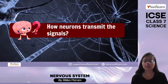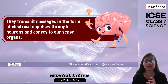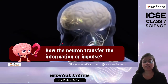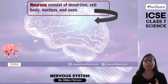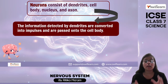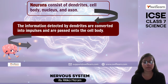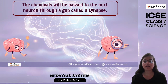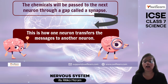How do neurons transmit the signal? Neurons transmit messages in the form of electrical signals or impulses and convey them to our sense organs. Neurons consist of dendrites, cell body, nucleus, and axon. The information is detected by the dendrite, converted to impulses, and passed into the cell body. The axon collects the impulse, and at the nerve ending these electrical impulses are converted into chemicals and released. These chemicals pass to the next neuron through a gap known as a synapse — and this is how a neuron transfers the message from one neuron to another.